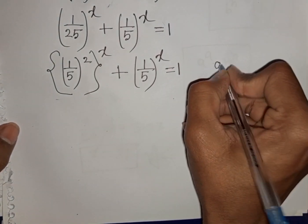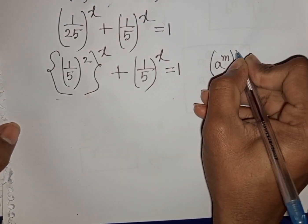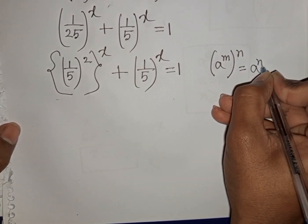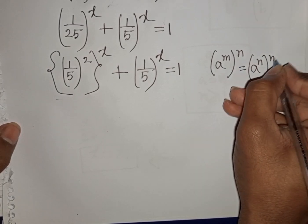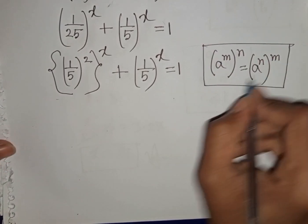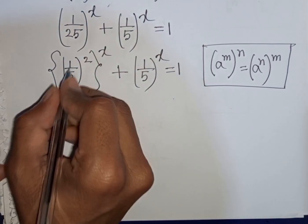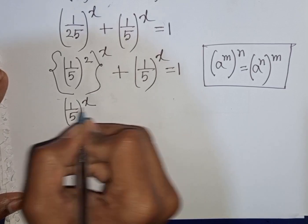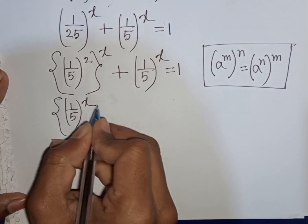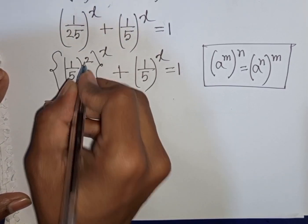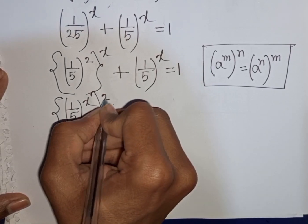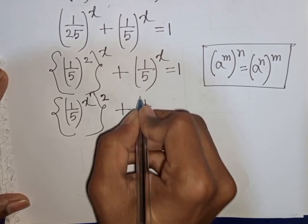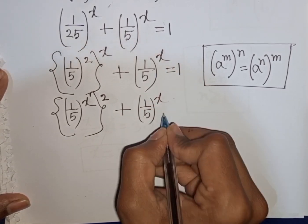We apply the exponential rule that (a power m) power n equals a power (n times m). So we can write (1 over 5) power x, then squared, plus (1 over 5) power x is equal to 1.